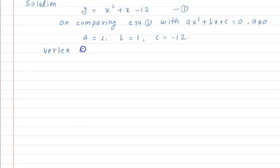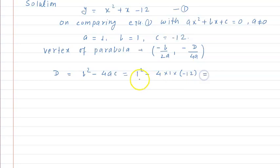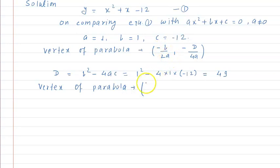Vertex of parabola kya hota hai: minus b by 2a and minus D by 4a. To humein D ki zarurat padegi. D kya tha — discriminant. To D is equal to b square minus 4ac is equal to 1 square minus 4 into 1 into minus 12, which gives 1 plus 48 equal to 49. So vertex of parabola is minus 1 by 2, and minus 49 divided by 4, that is minus 49 by 4.